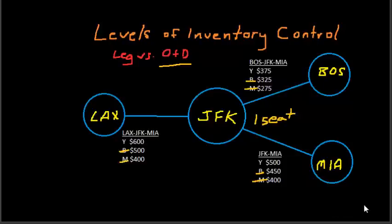Leg-level control allows you to calculate a protection level using this information. O&D control allows you to consider the entire network when making a decision at the leg level.